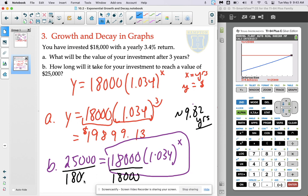So I'm going to divide both of those sides by 18,000. If I divide both sides by 18,000, I get rid of this and I create a new equation that says 1.034 to the X is equal to the quotient of those two numbers, which is the fraction 25 over 18.